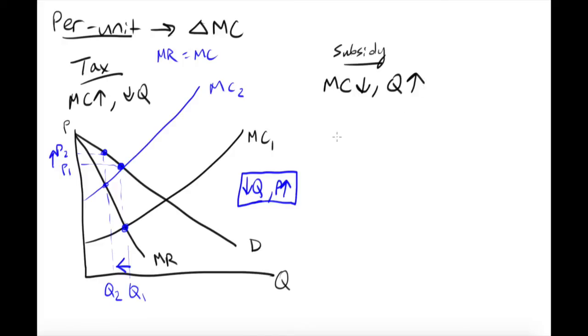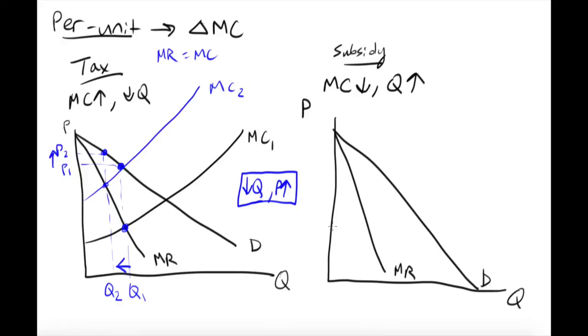And so what we want to think about is, again, the standard graph and the influence on the standard graph. And so we have this downward sloping demand, twice that for marginal revenue. And then we have our original marginal cost curve. And what we know is that this marginal cost curve is going to go down.